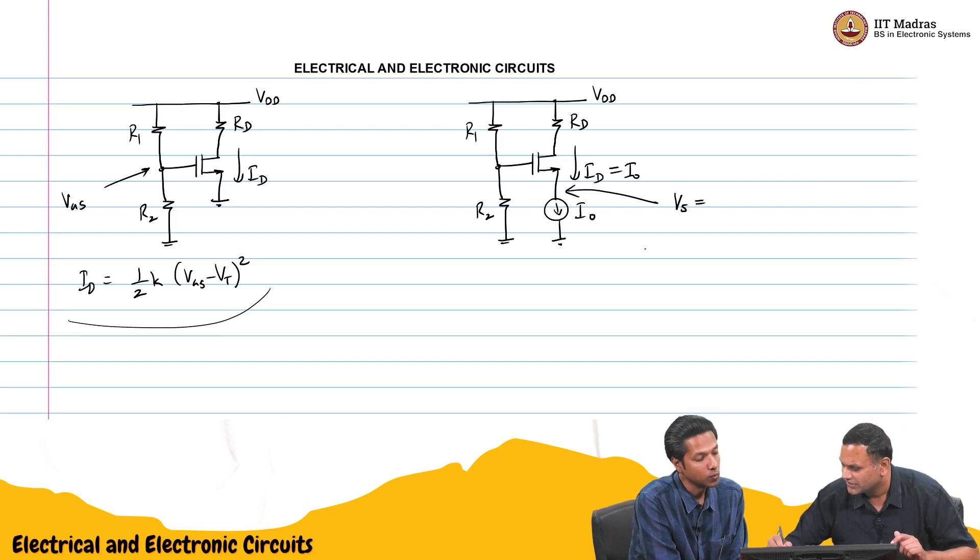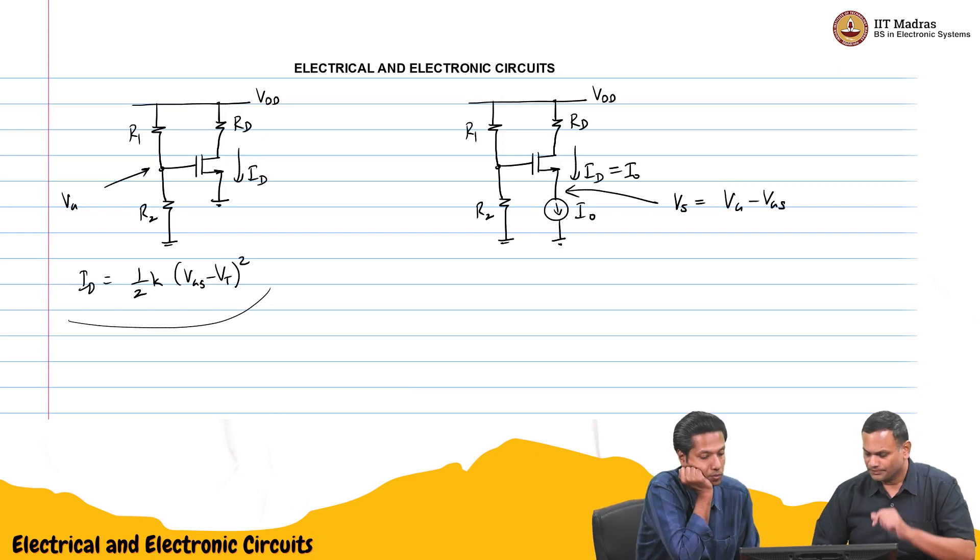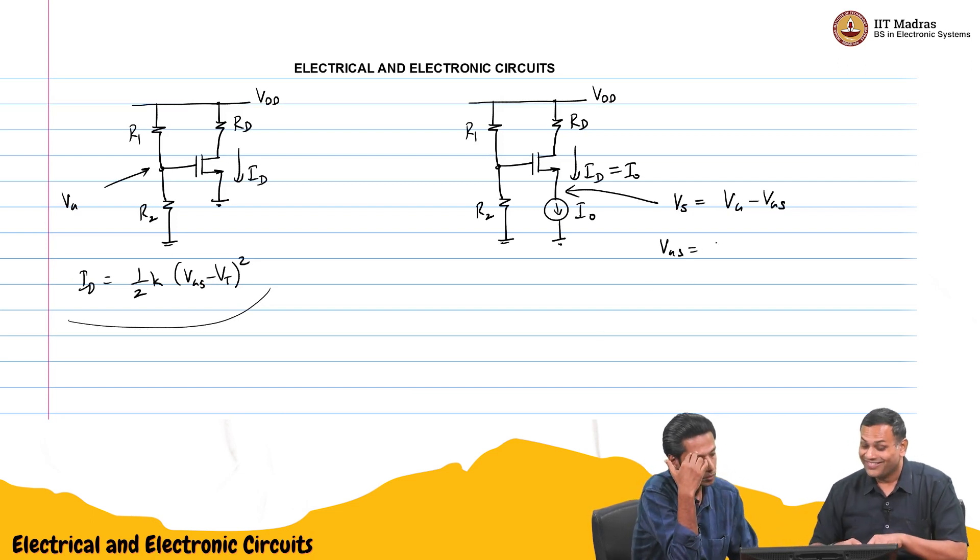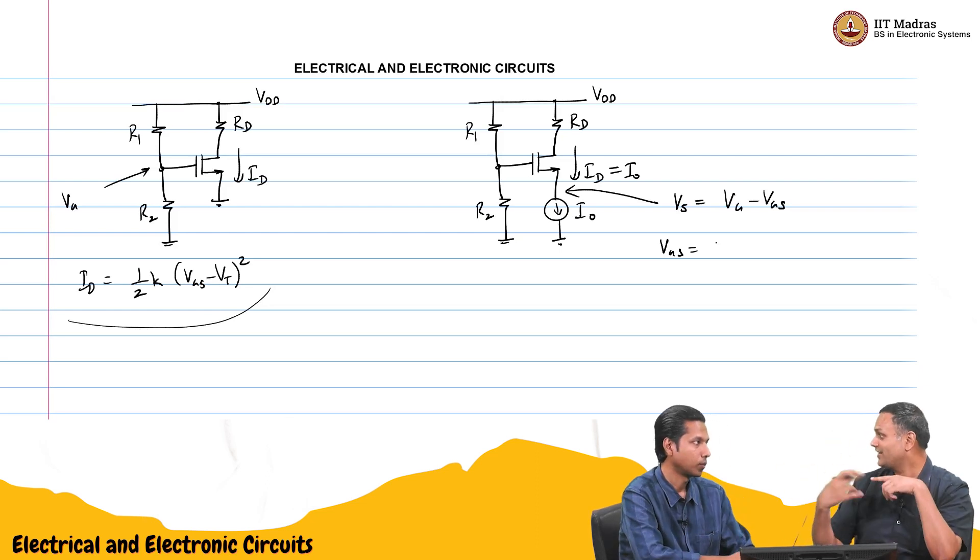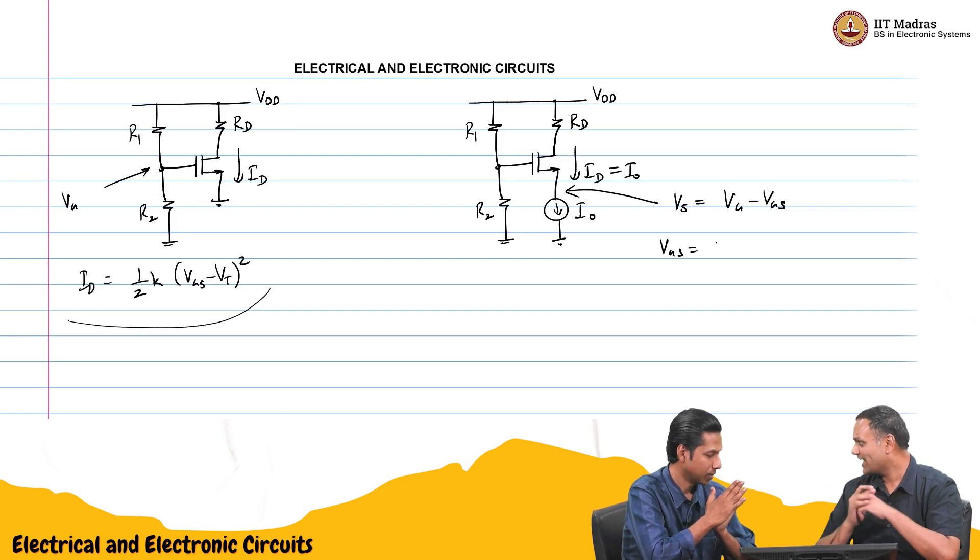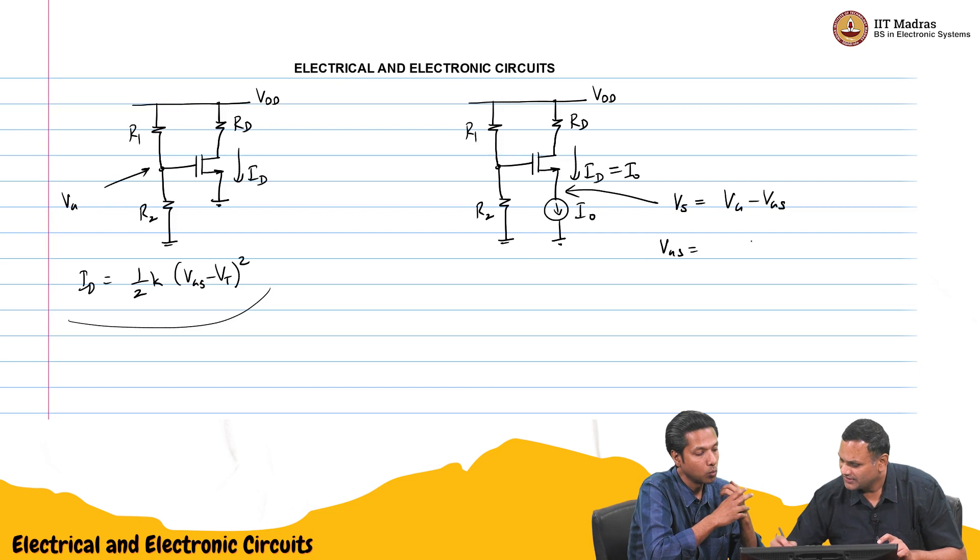This source voltage Vs will just be maybe we will call that Vg. Vg will just be calculated like this. Vgs from the same equation. For the NPN BJT emitter current was some saturation current exponential Vbe by Vt. We also expressed it in the reverse. Vt ln iE by iS. We can do the same thing here. We can express Vgs in terms of Id. In that case it will be Vt plus root of 2 Id by K.